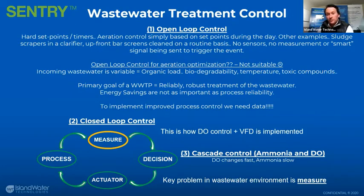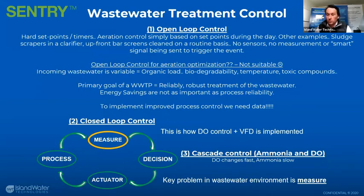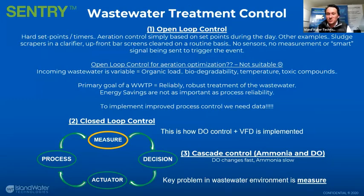Moving to closed loop control: we have a process, sensors providing information from the wastewater stream that allows us to make decisions, which can implement an actuator to turn a blower on or off, turn on a pump, or close a valve. All the way to more refined cascade control, using multiple sensors providing levels of insight. But the same problem always remains: wastewater is a challenging environment for sensors. If you're using light-based sensors in an environment where biomass loves to grow on all surfaces, it's very challenging to generate data you can reliably depend on consistently.